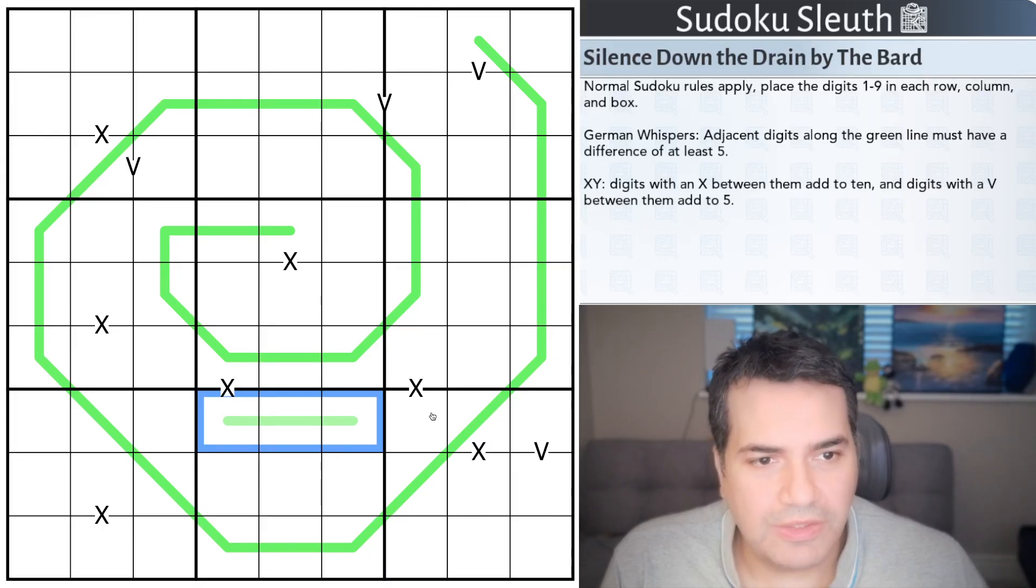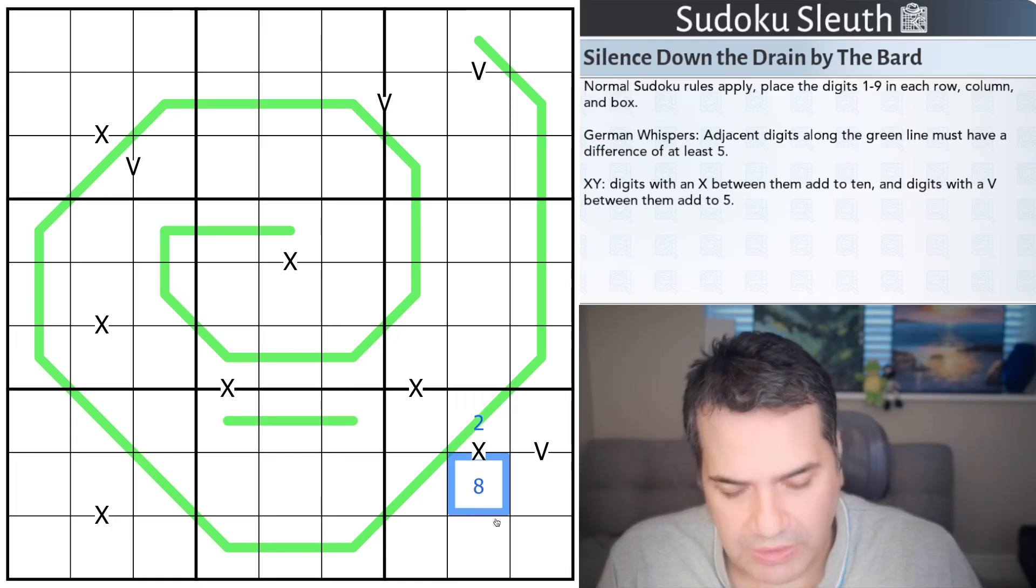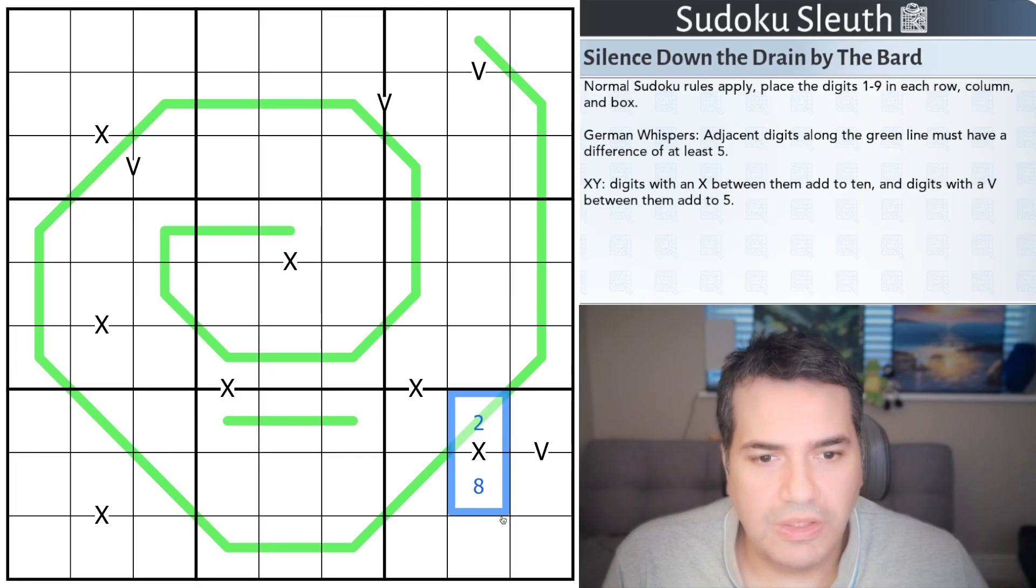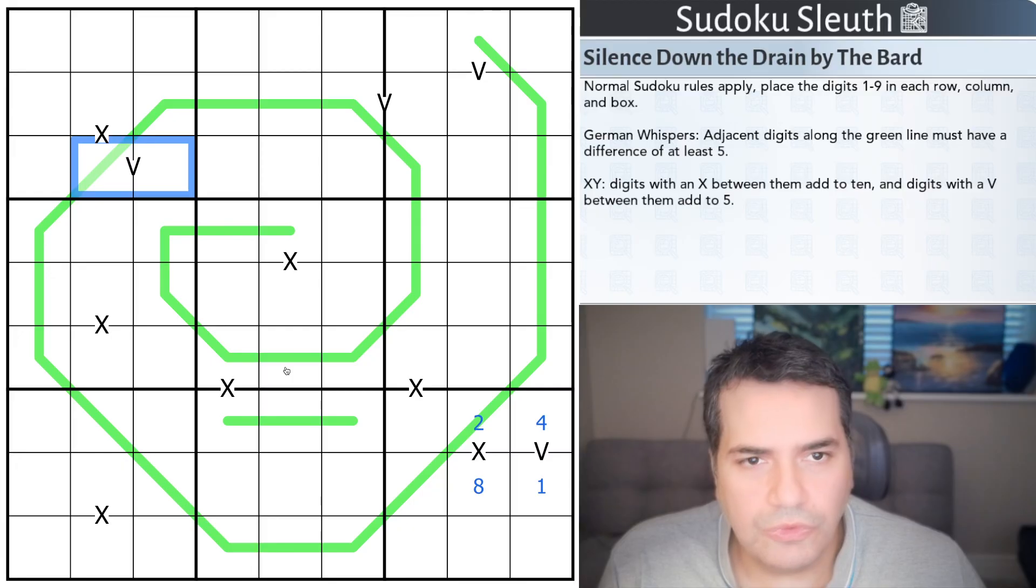Then we have X's and V's. Digits with an X between them add up to ten. If that's a two, this would have to be an eight to make sure that these two cells add up to ten. And digits with a V between them add to five. So if that is a one, that would have to be a four to make sure that these two cells add up to five. Super. That's all the rules we have for today.